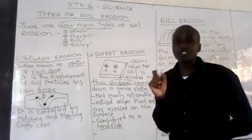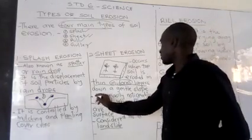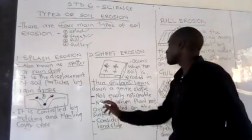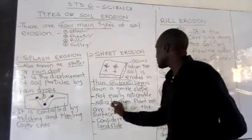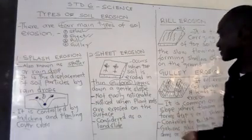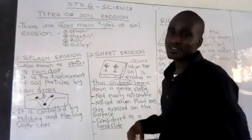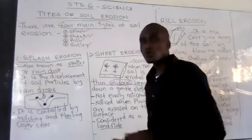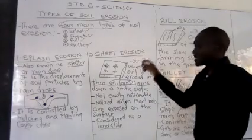Sheet erosion occurs down a gentle slope and is not easily noticeable. It is noticed when plant roots are exposed on the surface. It is also associated with landslides — you may have heard about landslides burying or affecting people. That is related to what we call sheet erosion.